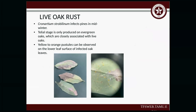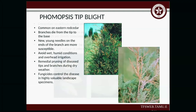Live oak rust — this is going to infect pines in midwinter. Live oaks are semi-evergreen — they keep their leaves year-round and drop them when they replace new ones. The telial stage is produced on the evergreen oaks. You'll see yellow to orange pustules on the back of the leaf — they kind of look like a fuzzy moss. For phomopsis tip blight, you'll mainly see this on eastern red cedar. Branches die from the tip to the base. New young shoot needles at the end of the branch are more susceptible. Avoid wet, humid conditions and overhead irrigation. Do remedial pruning of diseased tips during dry weather, and you can use fungicide to control disease on highly valued landscape specimens.